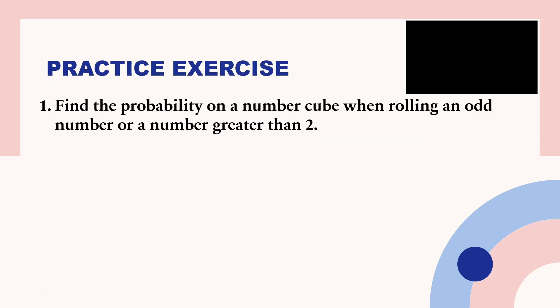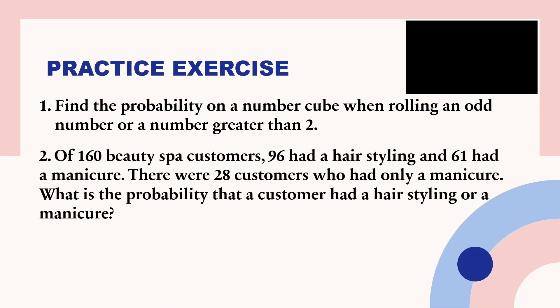Now, it's your turn. Let us find the probability of union of two events by answering the following questions. One, find the probability on a number cube when rolling an odd number or a number greater than 2. Two, of 160 beauty spa customers, 96 had a hair styling and 61 had a manicure. There were 28 customers who had only a manicure. What is the probability that a customer had a hair styling or a manicure? And number three, what is the probability of choosing a club or a heart? So, you have one minute to answer the following questions.